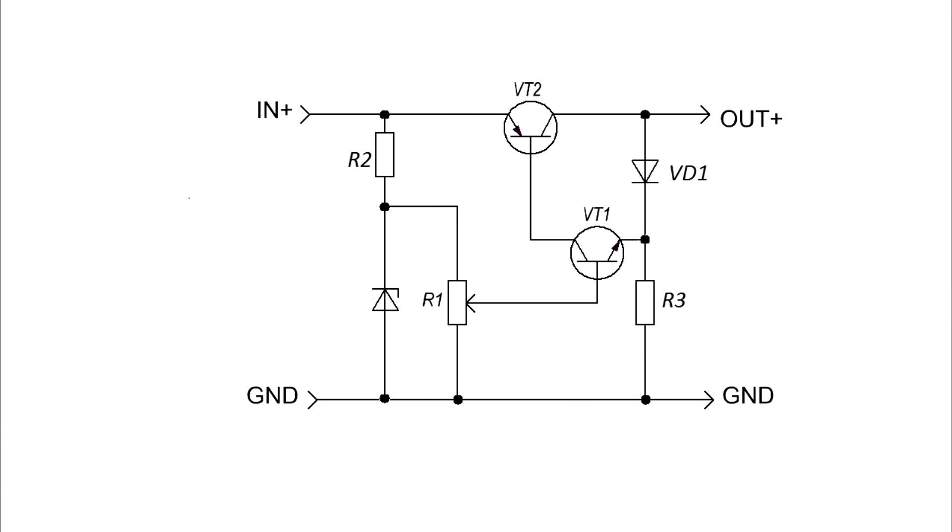Adding the second transistor to the circuit, we get a very large current gain and also unload the zener diode. Now, the main transistor will be controlled by the first transistor. That is, the zener diode in our circuit sets the output voltage limit. The variable resistor makes it possible to regulate this voltage, and the transistor cascade amplifies the current.